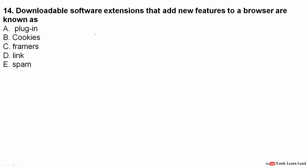Next question: downloadable software extensions that add new features to your browser are known as what? Cookies are not software — they are messages given to the browser by a server. Spam is a type of message. A link is a path to another website or URL. The answer is a plugin — plugins add extensions and new features to browsers, and they are downloadable software.